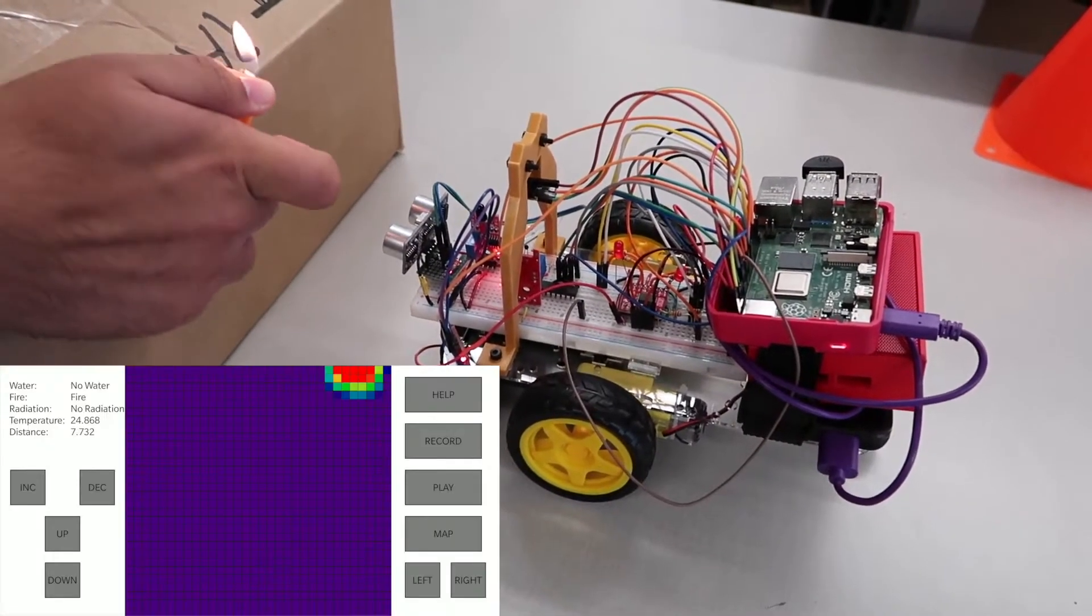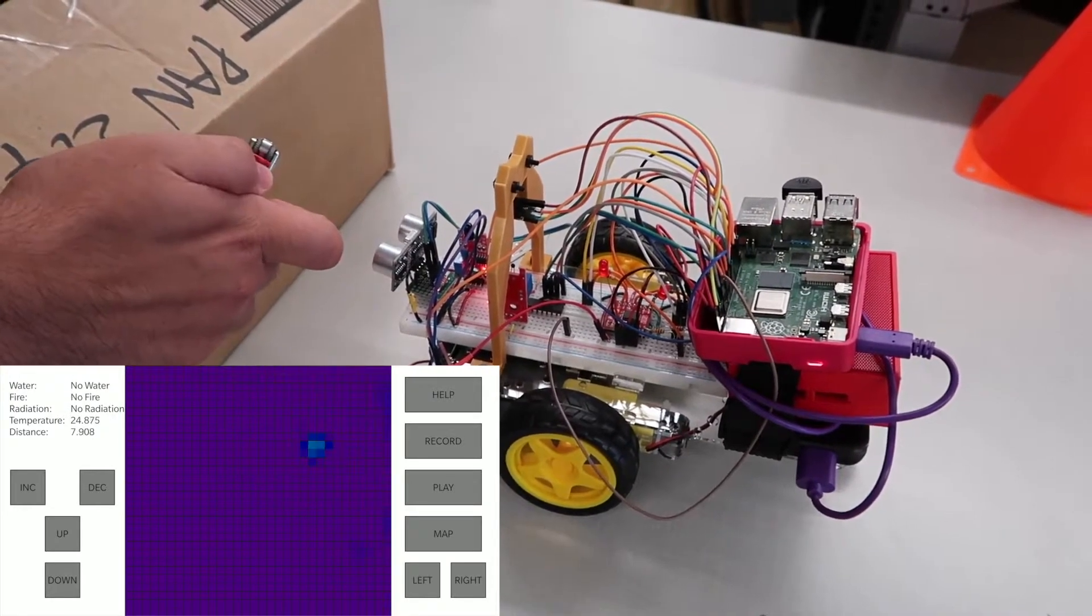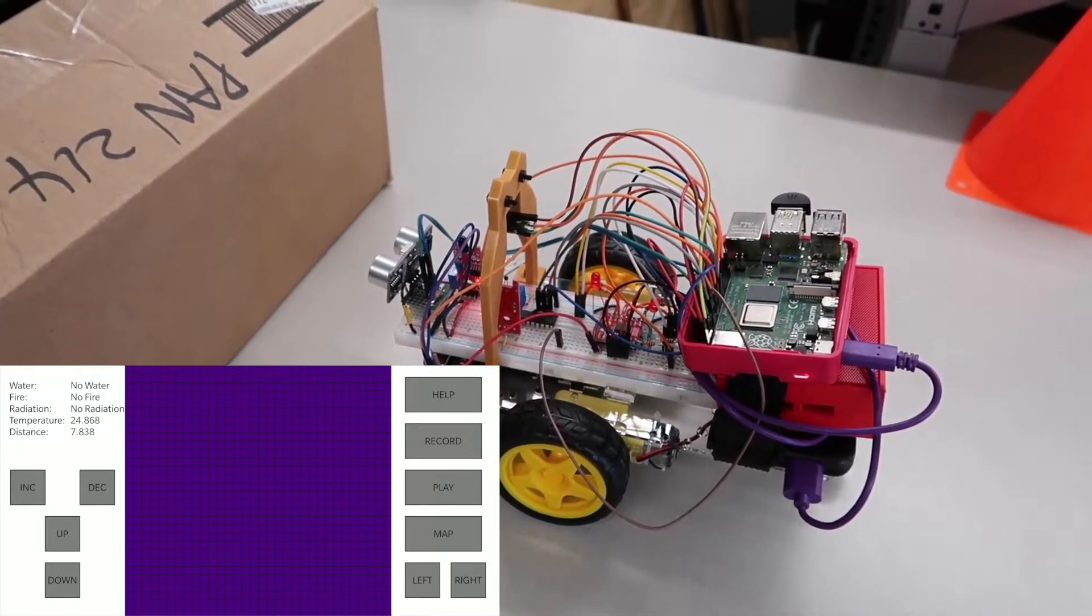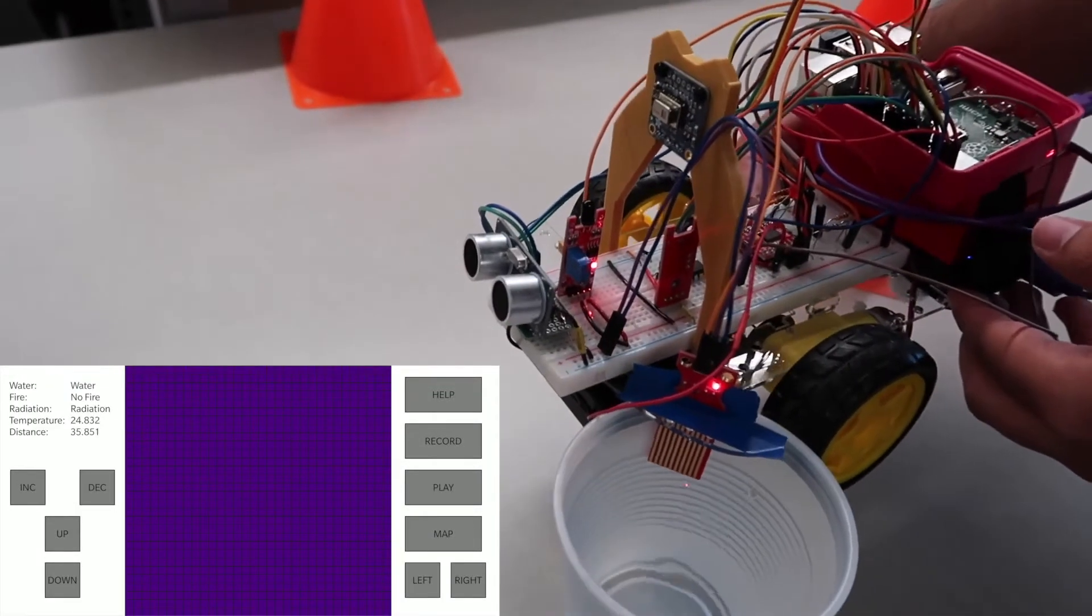The IR camera allows the user to discover warm objects in all conditions, and we distinguish between a fire or a human being by using the flame sensor. The robot can also detect electromagnetic radiation, real-time temperature, and water.